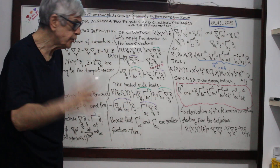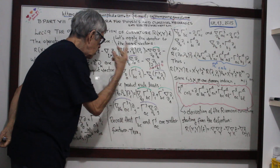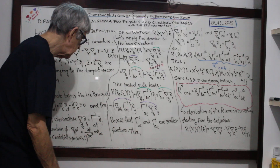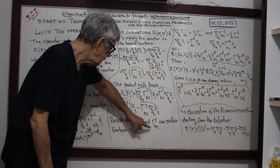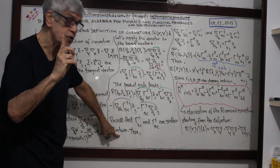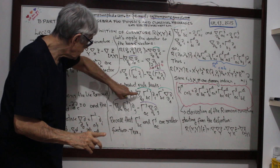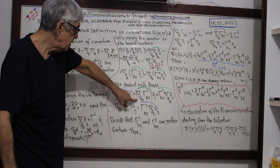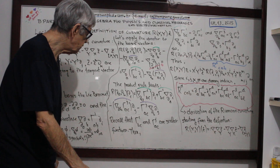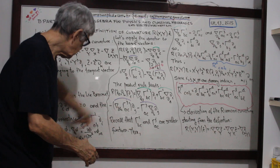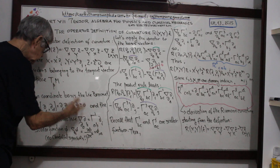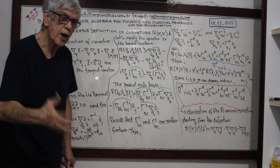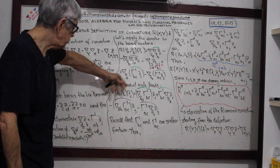So then I will have four terms: the green one leads to two terms, and the purple one to two other terms. Recall that the Christoffel symbols are scalar functions, so I can substitute the covariant derivative by the partial derivative, because the Christoffel symbols are scalar functions.